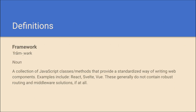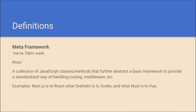There are still a few more definitions. If I talk about frameworks, that's just a collection of JavaScript classes and methods that provide a standardized way of writing web components — things like React, Svelte, or Vue. They generally don't have robust routing and middleware solutions on their own, which is where meta-frameworks come in. A meta-framework is a framework for your framework — it builds in routing and request handling. So if you have React as your framework, you might have Next.js as your meta-framework. Svelte has SvelteKit, and Vue — my favorite — has Nuxt.